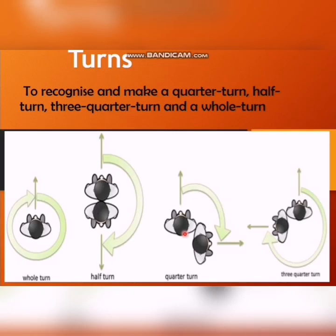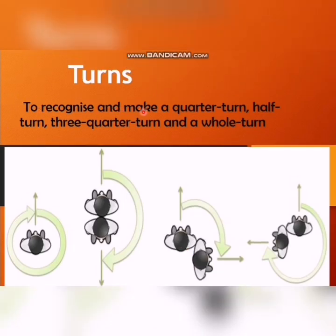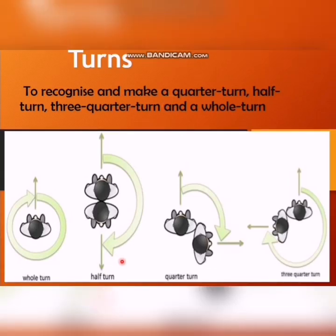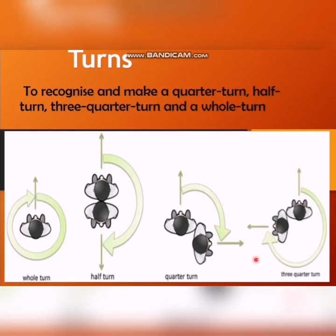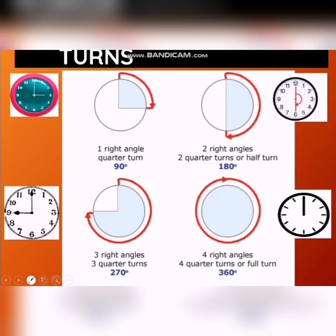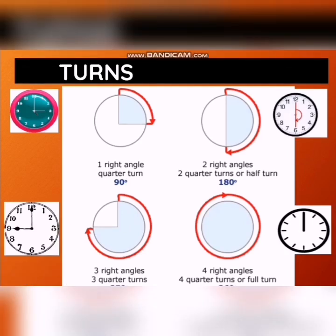Now, what are turns? A quarter turn is when the clock moves 15 minutes. This is a quarter turn. A half turn is when the clock moves 30 minutes. A three-quarter turn and a whole turn complete the four rotations, all in the clockwise direction.